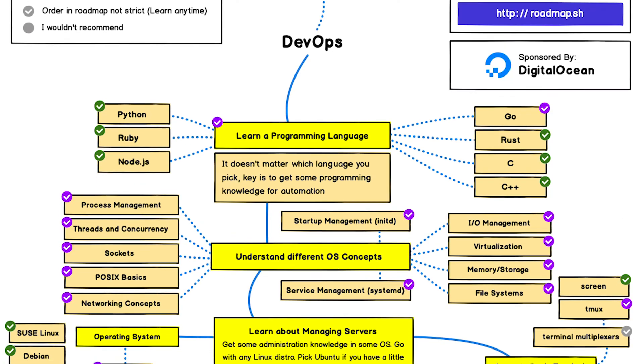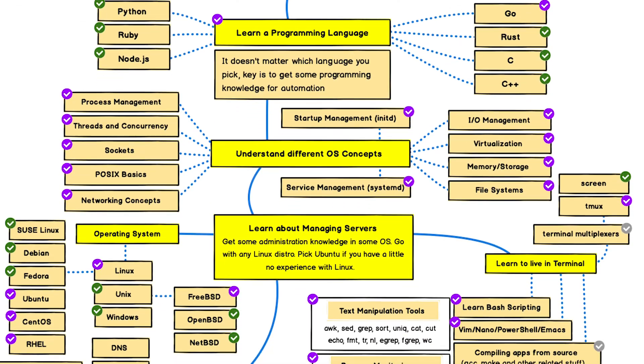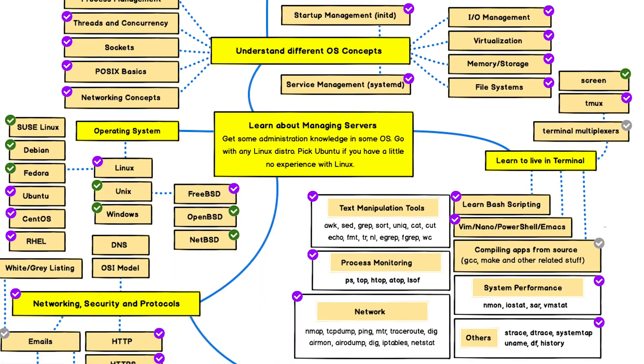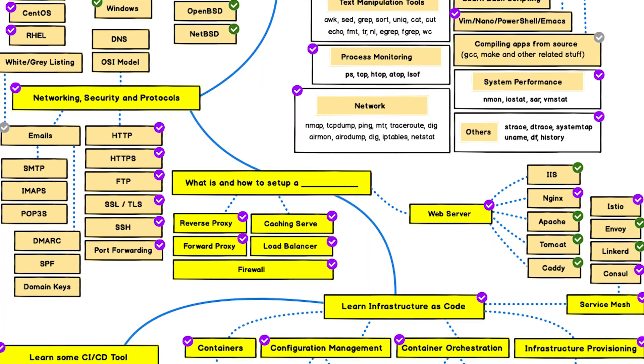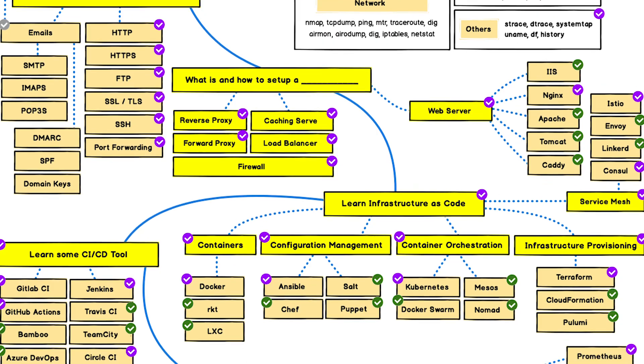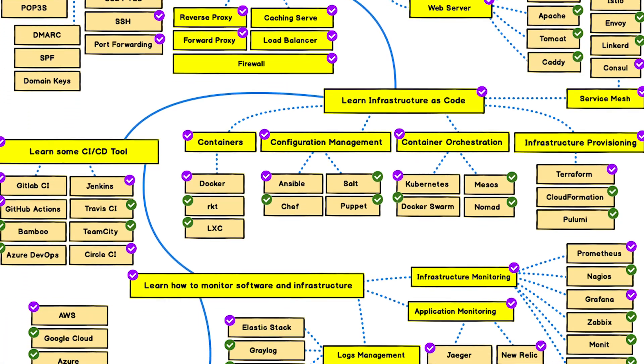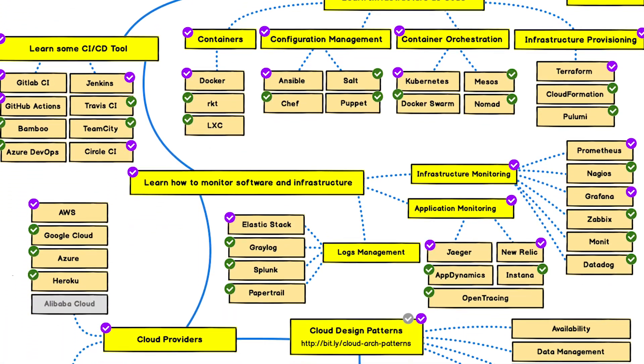Now let's understand what skills are required to build a successful DevOps team through this well-elaborated DevOps roadmap diagram. I am referring to this DevOps roadmap diagram from the roadmap.sh website. You can find the URL of this page in my description box below.